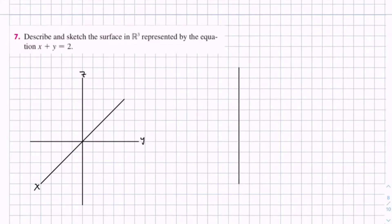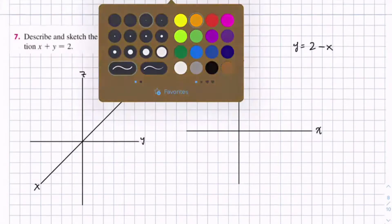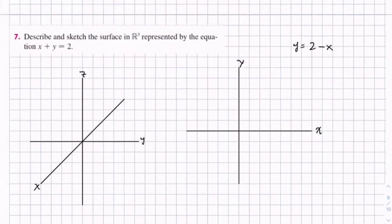Just to get a better idea of what it is in three dimensions. So, if you draw this in x, y, it's just a simple line, y equals 2 minus x, which looks something like this.